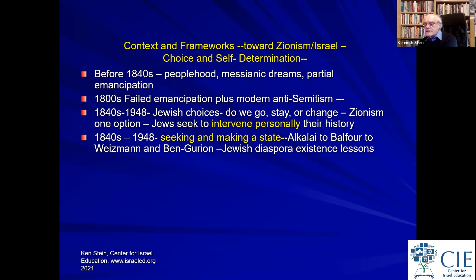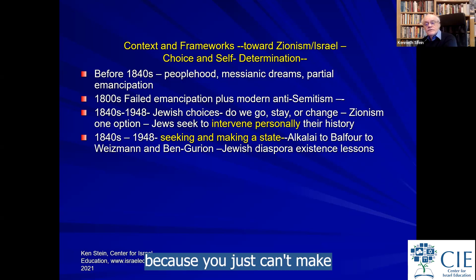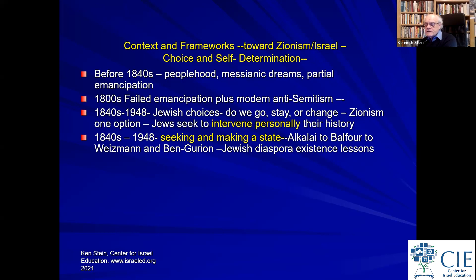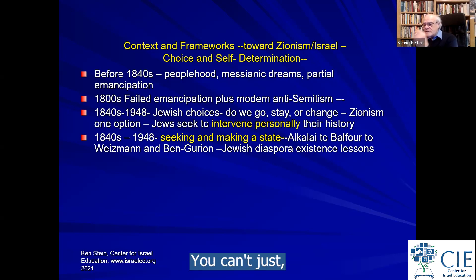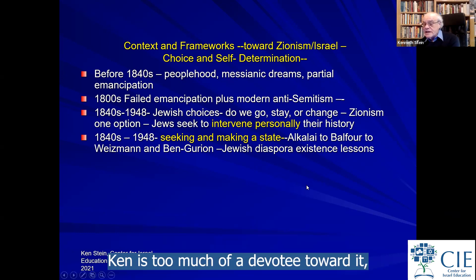Jewish diaspora living were lessons learned for state building. You just can't automatically make a state in 1945 because six million of your co-religionists have perished. I can't play basketball against LeBron James unless I've had some practice and know how to shoot. It just doesn't happen automatically. And since context and content is so terribly important, I would rather you be too devoted to it than not at all.